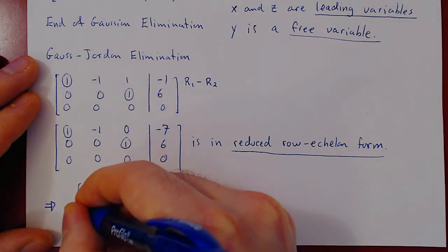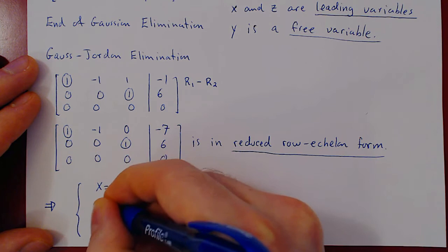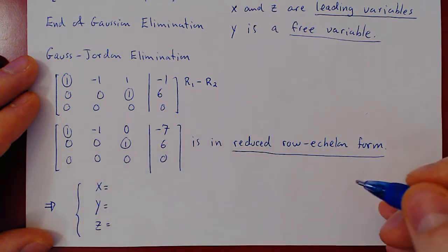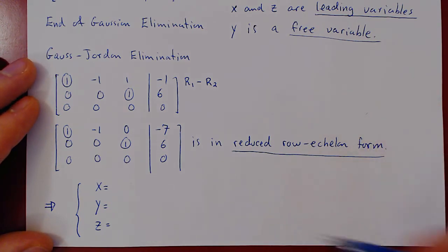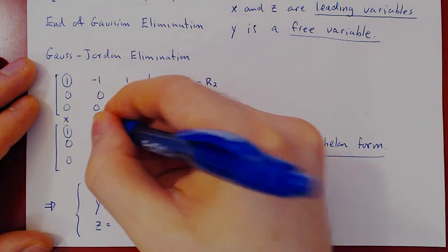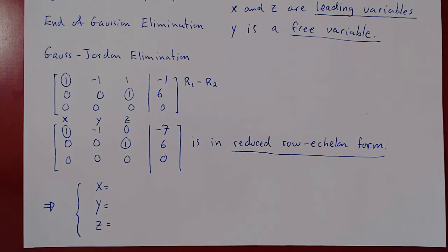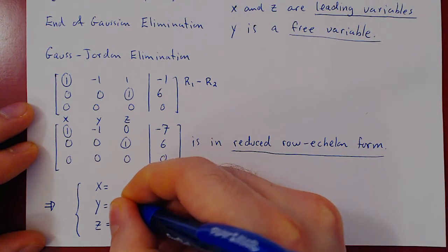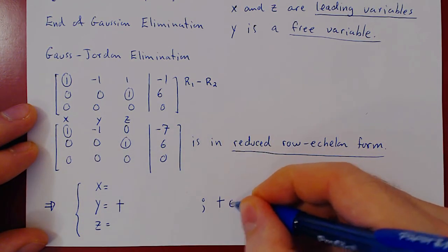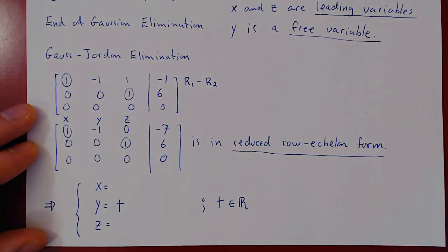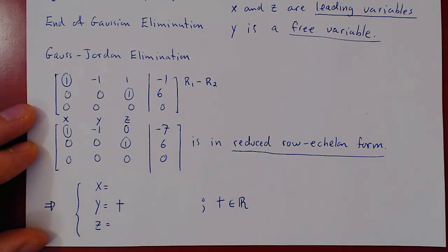We can now write our solution set. There are two types of variables: the leading variables x and z, and the free variable y. We always handle free variables first by assigning them parameter values. Since y is free we say y equals t, where t can take on any real value of our choice. If you had more than one free variable you could use r, s, t and so forth.